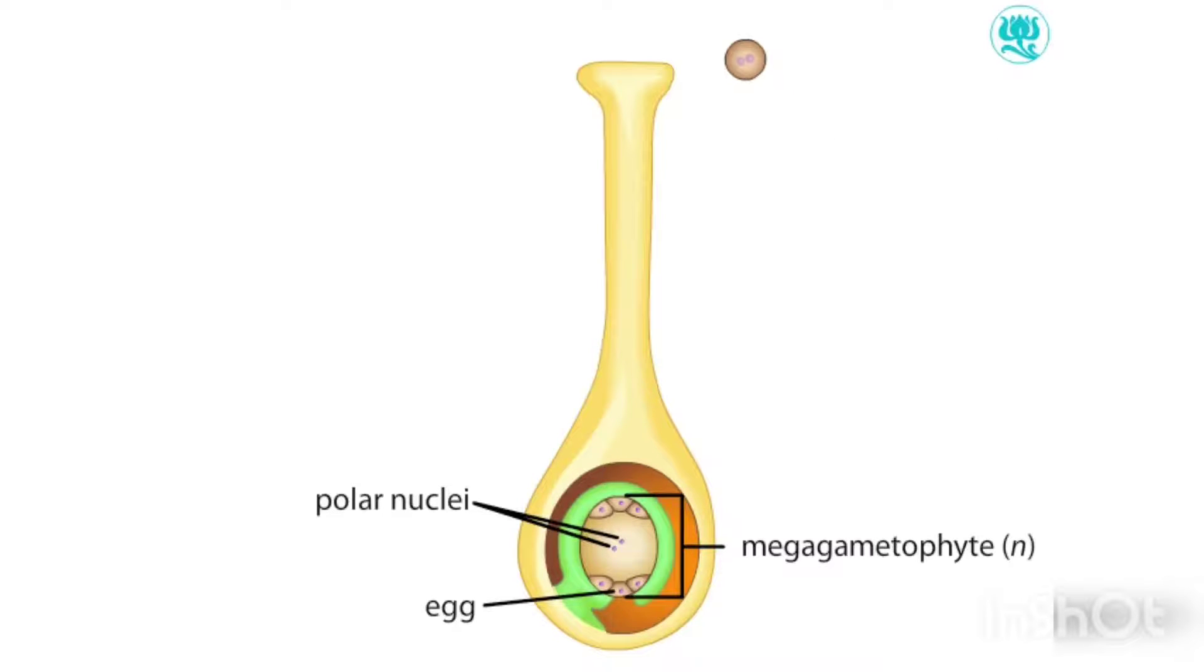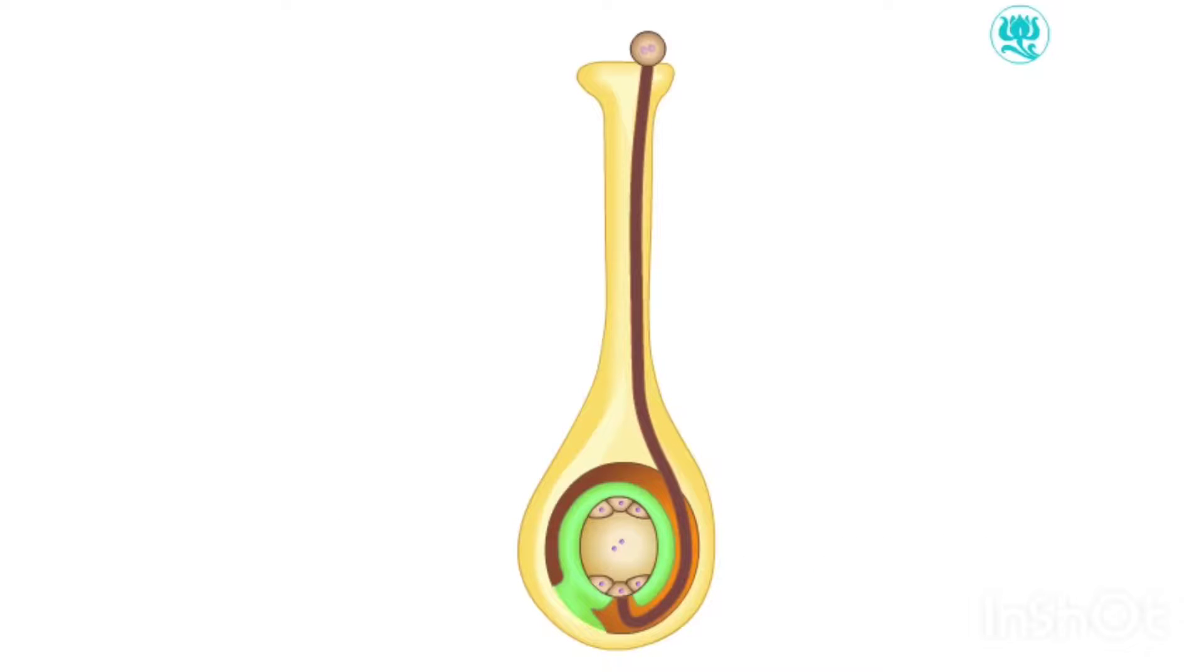The pollen grain pollinates the female parts of the flower by landing on the stigma. Here, the pollen grain germinates and a pollen tube grows down the style until it meets the female gametophyte. Two sperm from the pollen grain travel through the pollen tube and enter the female gametophyte.